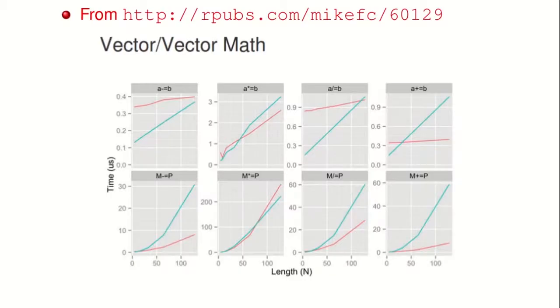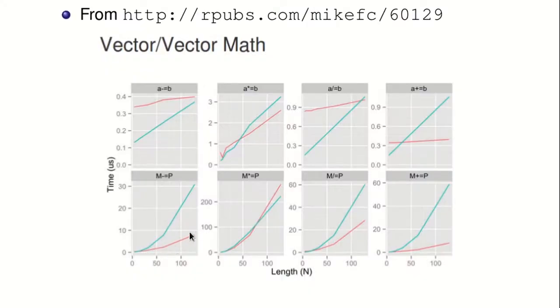The benchmarks show vector addition, subtraction, multiplication, and division — the blue line is NumPyPy and the red line is NumPy. Until we get to around vector length 100, NumPyPy is actually faster than NumPy, even though NumPy is highly optimized and written in C. For matrix operations in 2D, we start about the same but get slower because our two-dimensional iterator is not as good as going through a 2D loop in C.